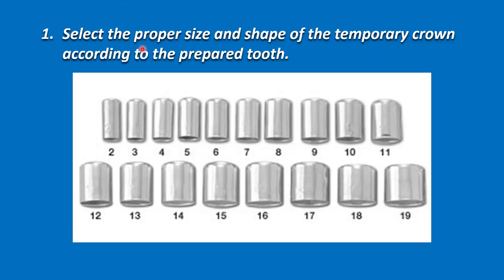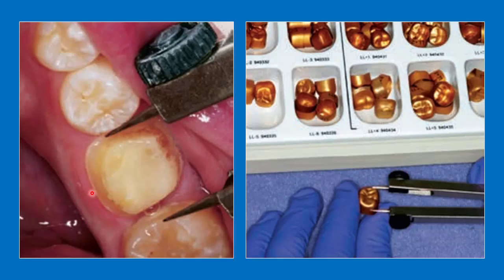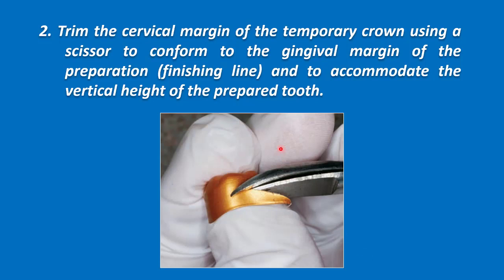The clinical procedure for aluminium crowns: first, select the proper size and shape of the temporary crown according to the prepared tooth. There are multiple sizes of aluminium crowns, so we select the size matching the prepared tooth and compare it with the appropriate aluminium crown. Then we trim the cervical margin of the temporary crown using a pair of scissors to conform to the gingival margin or finishing line.